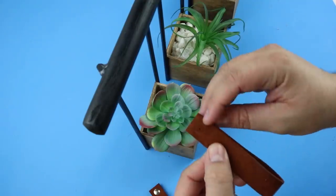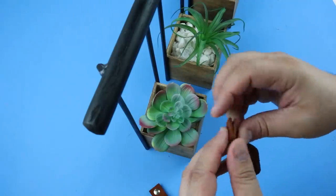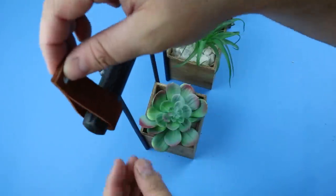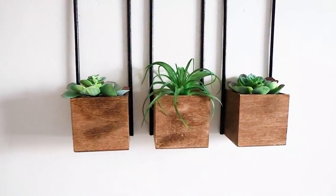And then we're just going to loop these and then push the thumbtack through those and then the tacks will then go into the wall. Again, there's really not a lot of weight to this so you shouldn't have to worry about those falling out.